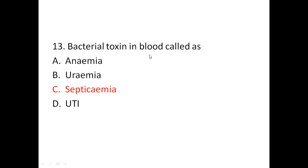Thirteenth question: bacterial toxin in the blood is called? Options are anemia, uremia, septicemia, and UTI. The answer is septicemia. Anemia is the decreasing of hemoglobin percentage or loss of blood. Uremia means increased levels of urea and other nitrogenous waste in the blood. UTI means urinary tract infection. The right answer is septicemia, that is the presence of bacterial toxin in the bloodstream.